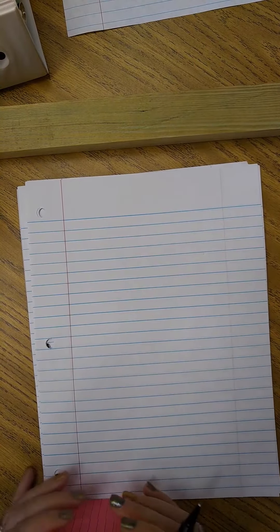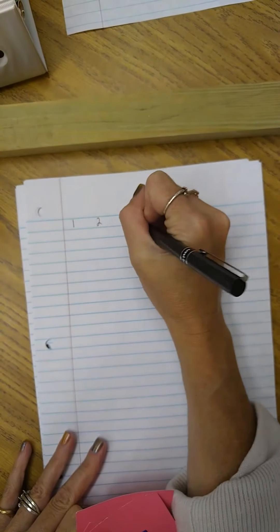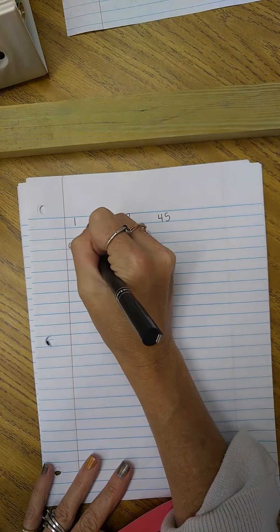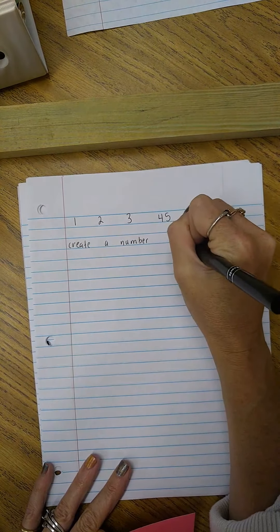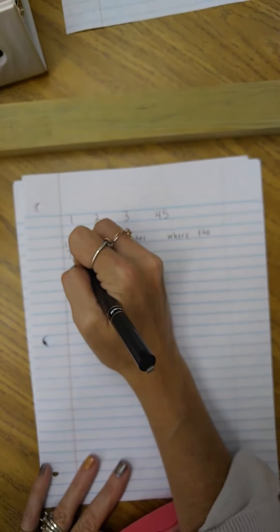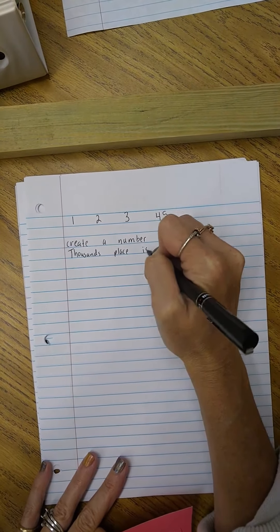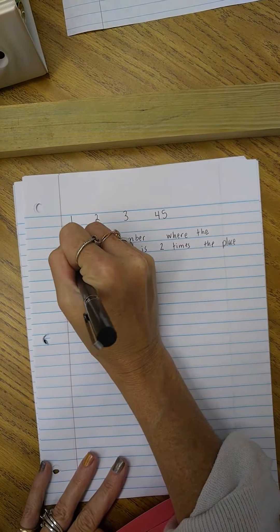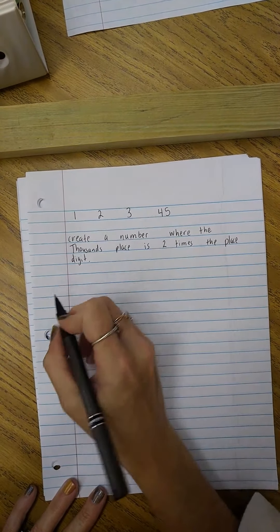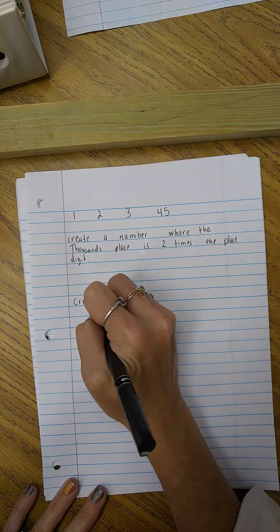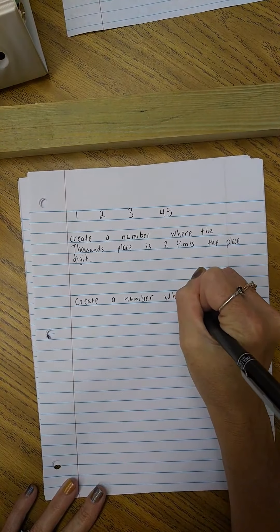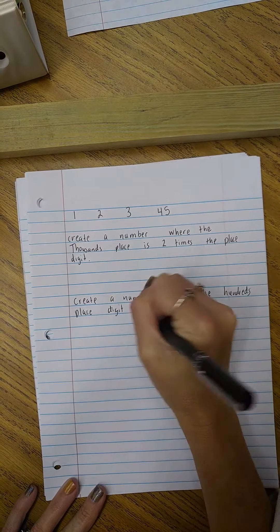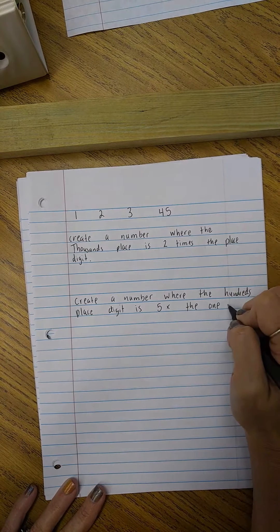So here are the cards that the children need to use. They need to use one, two, three, four, and five. And I want them to create a number where the thousands place is two times the tens place digit. So create that number, and then with those same numbers create a number where the hundreds place digit is five times the ones place digit.